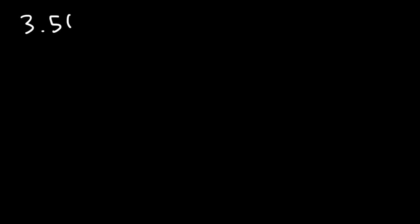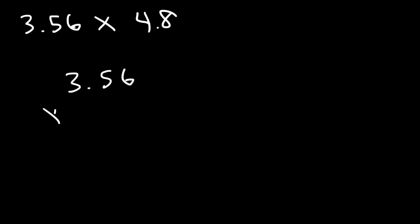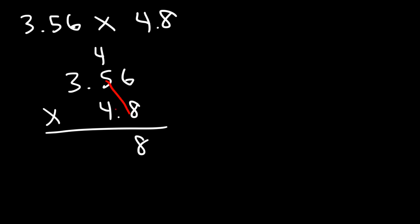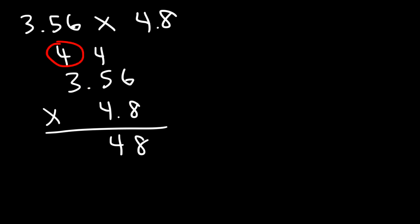Now let's work on a different example: 3.56 times 4.8. So 6 times 8 is 48, carry over the 4. Then 8 times 5 is 40, plus 4, so that's 44 — carry over the other 4. And then 8 times 3 is 24 plus 4, which gives us 28. Now let's add a 0 for the next row.